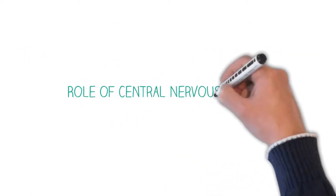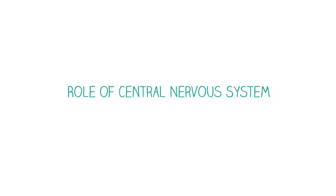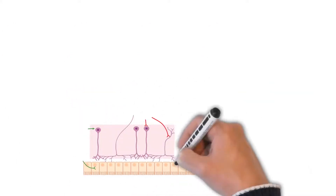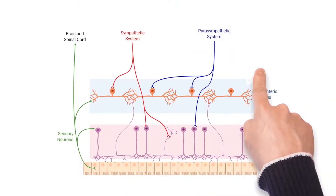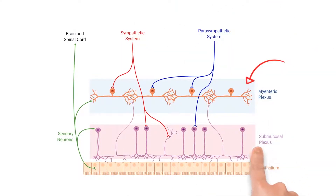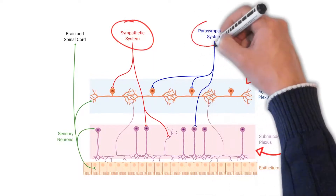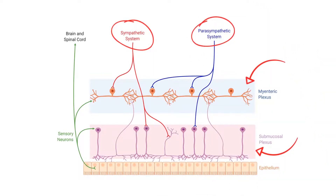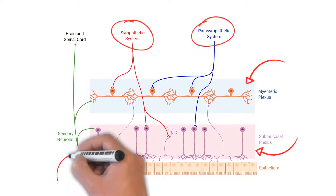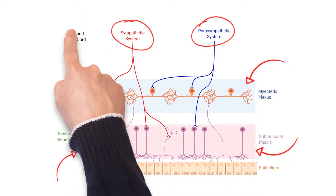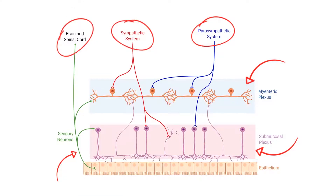Finally, we can have a look at the role of the central nervous system in digestive activity. The myenteric plexus and the submucosal plexus both have neuronal connections from the sympathetic and parasympathetic systems. Apart from this, sensory neurons originating from the intestinal epithelium pass messages to the submucosal plexus, myenteric plexus, and to the central nervous system. Based on various signals, the brain and spinal cord communicate with the digestive system through sympathetic and parasympathetic systems.